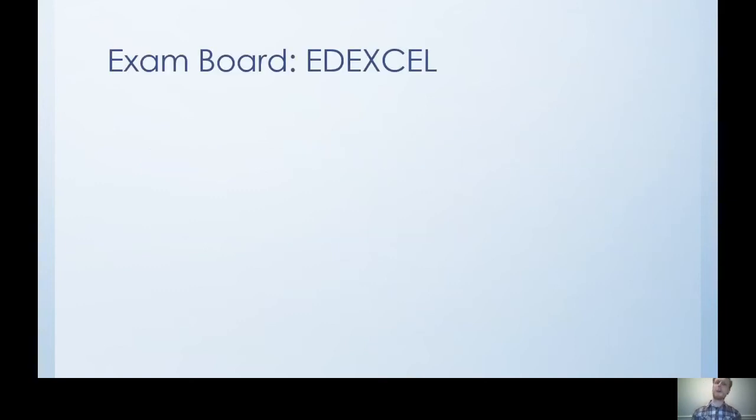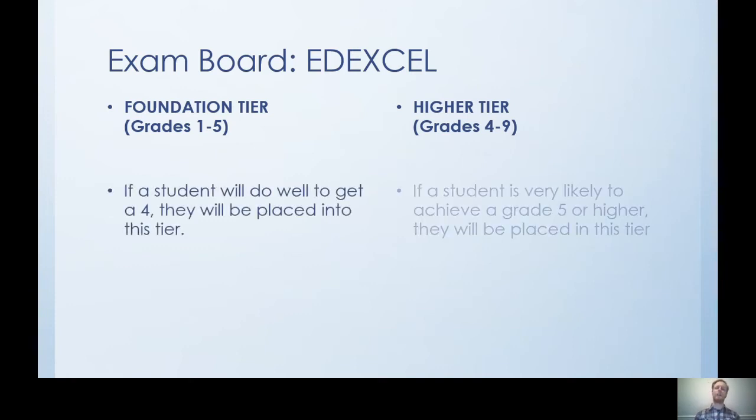So what exam board are we going to be doing over the next two years? It's called edXL, also called Pearson and there are two tiers. Depending on your capacity, we've got a foundation tier which is grades one to five and a higher tier which is grades four to nine. So on both tiers you're able to get what is called a good pass and a standard pass. A good pass is grade five and a standard pass is grade four. So in both of these you're able to stretch and hit that good pass rate.